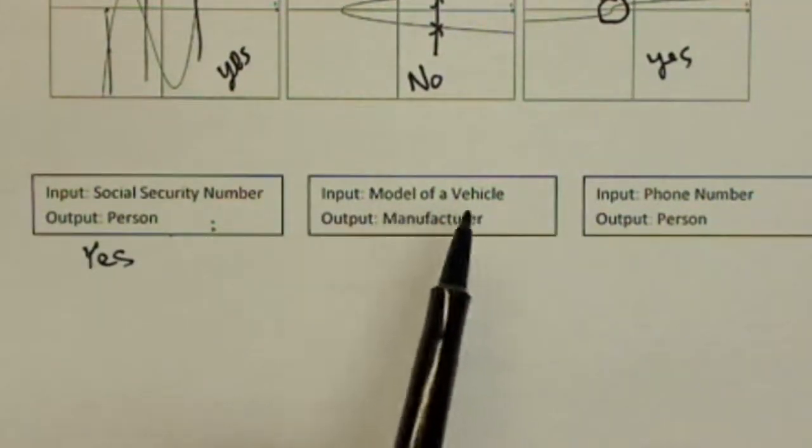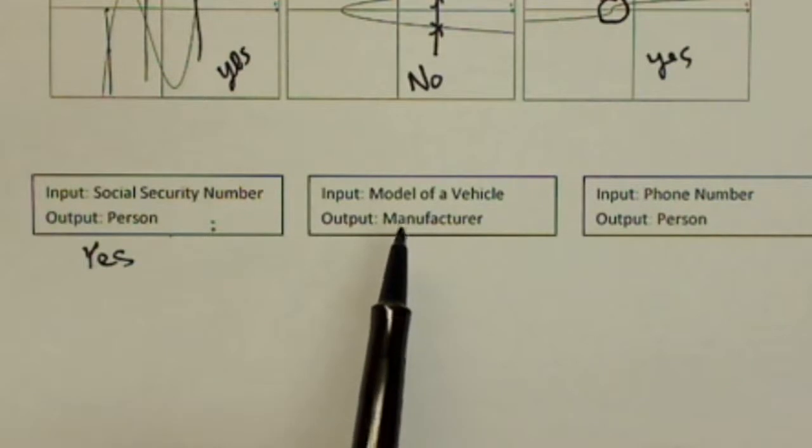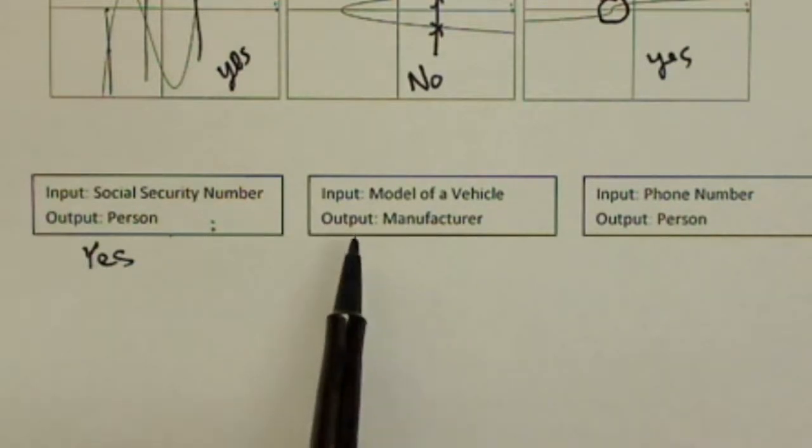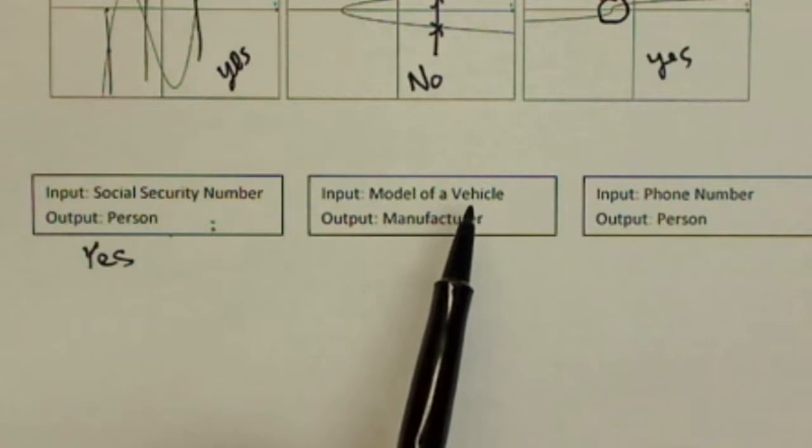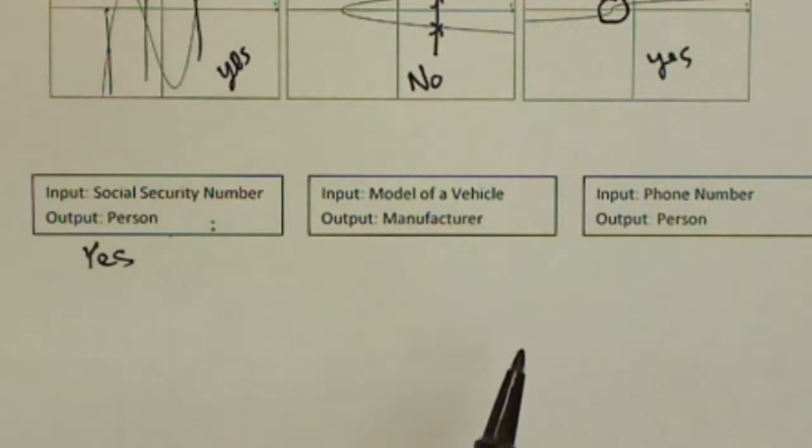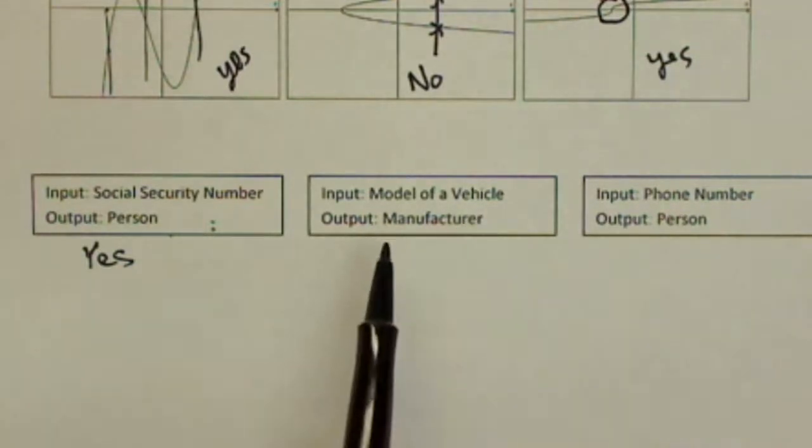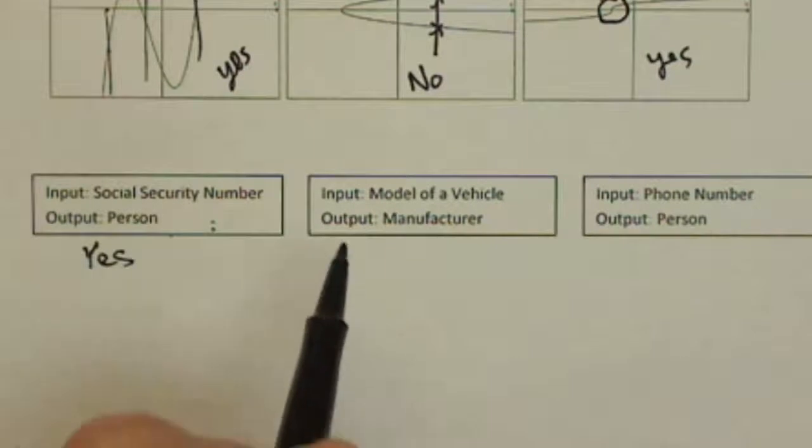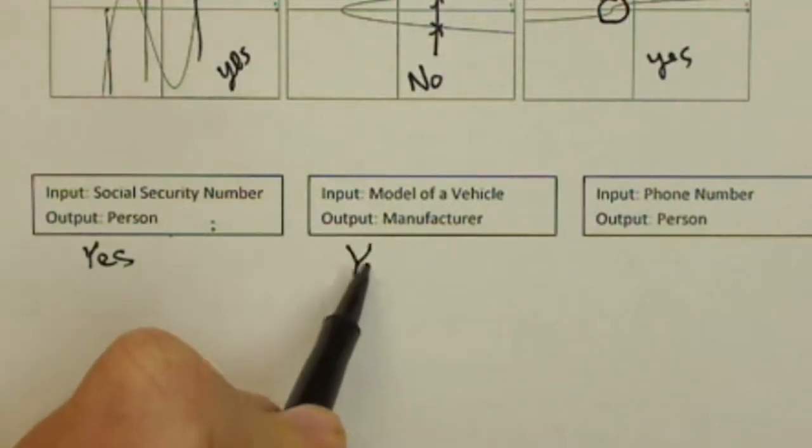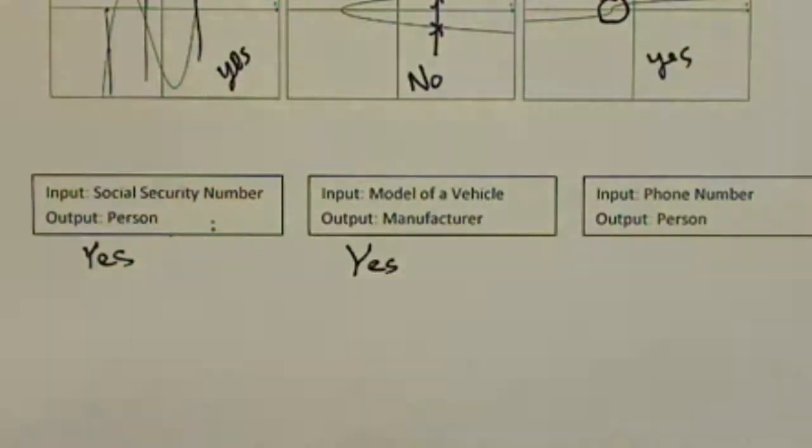Input, model of vehicle, output manufacturer. So, for instance, if we say that the model of a vehicle is an F-150, do we definitely know the manufacturer? We do because that's going to be Ford. So, this is going to be a yes because if we know the car is a Camry, then we know the manufacturer is Toyota.